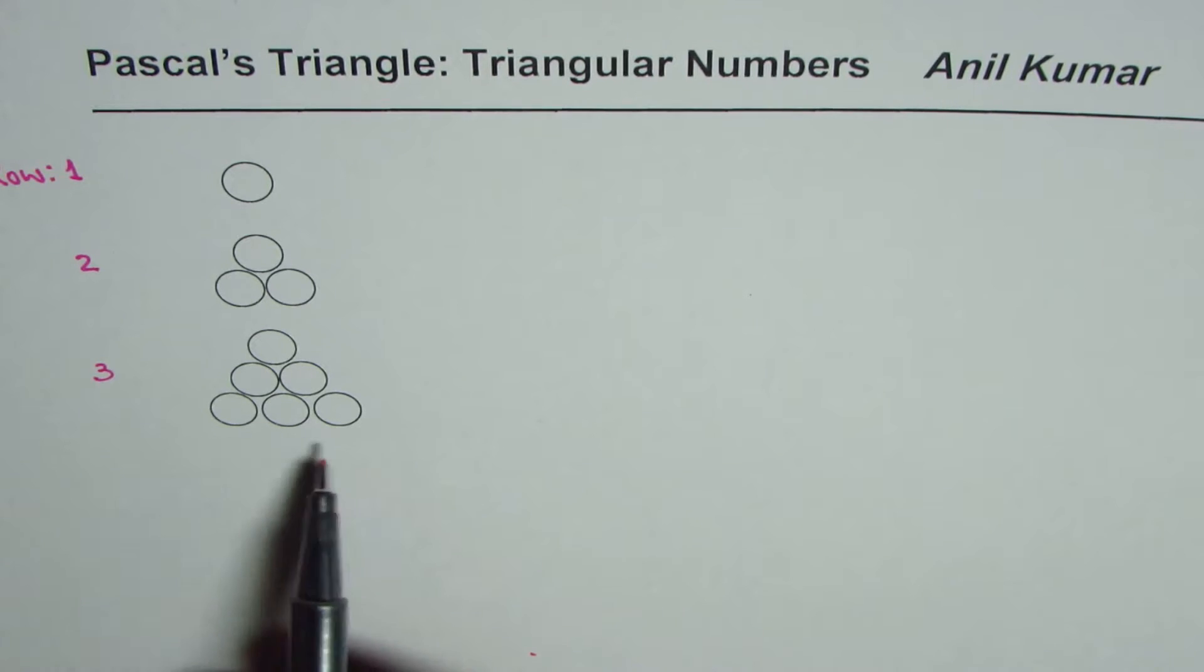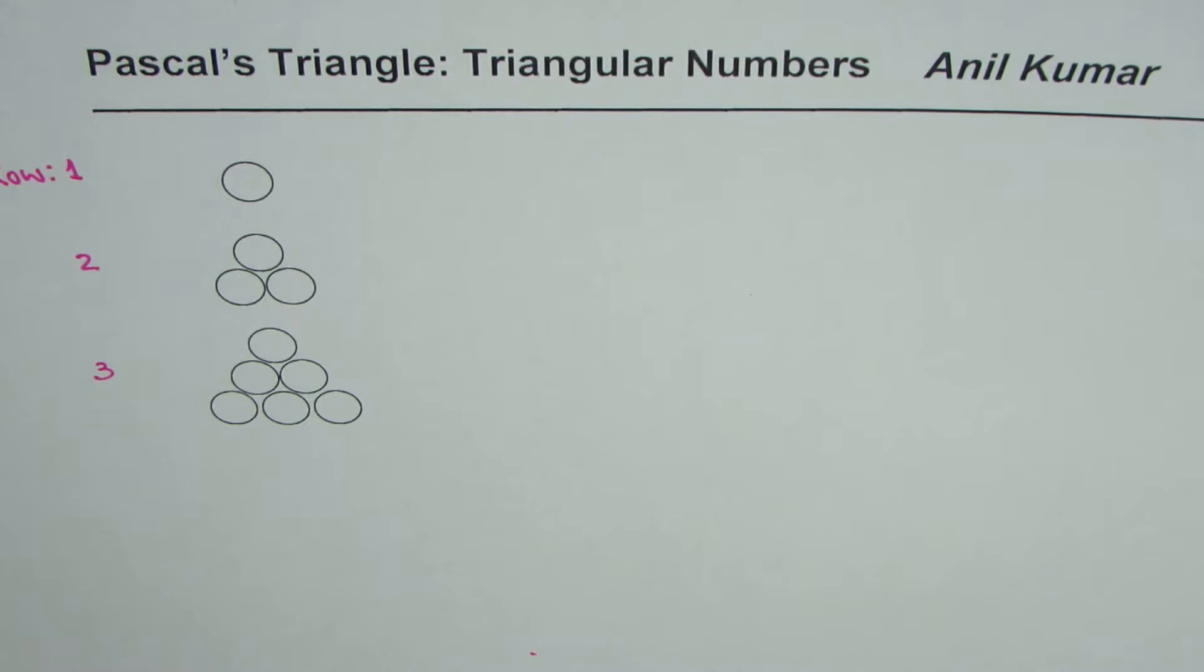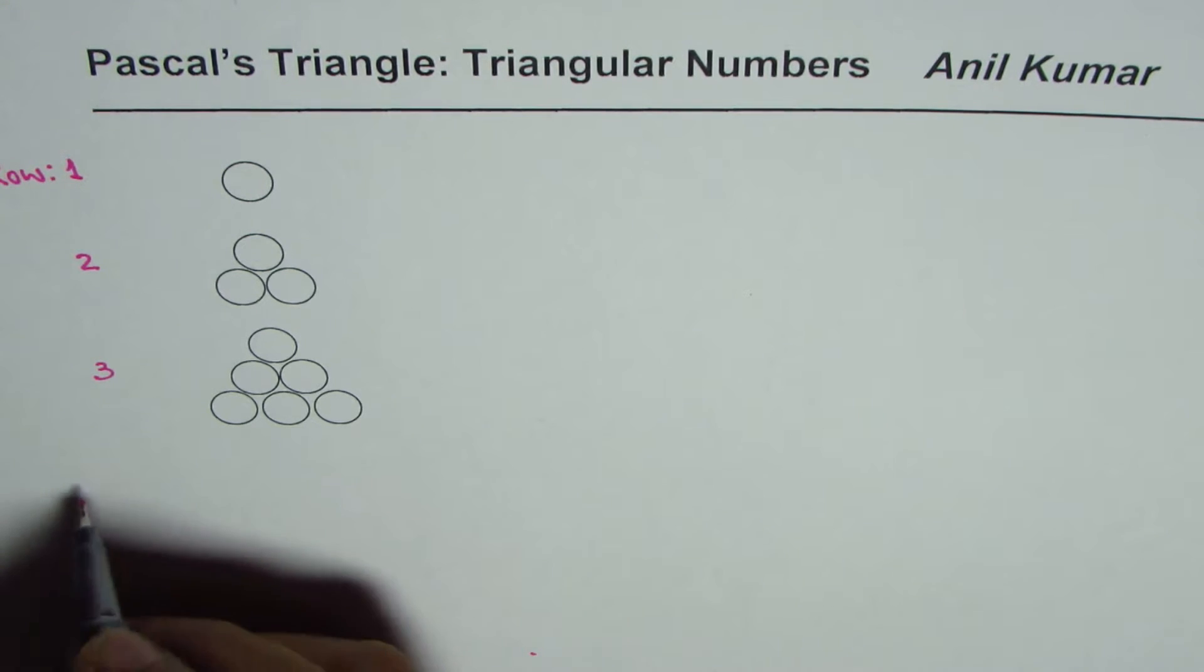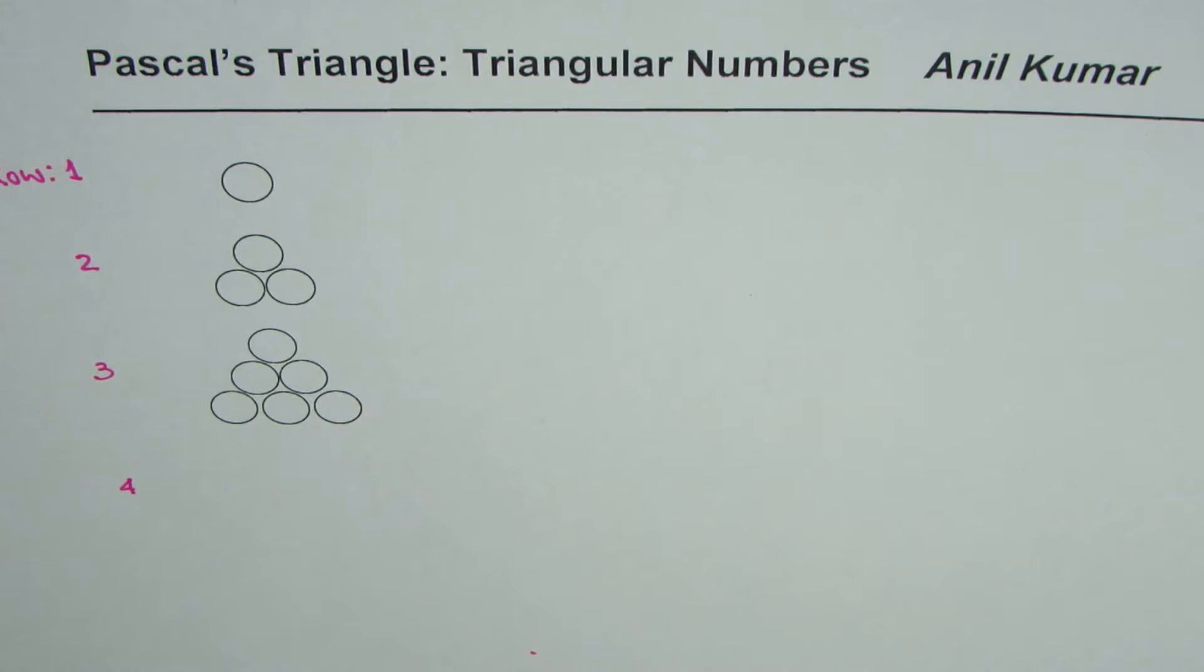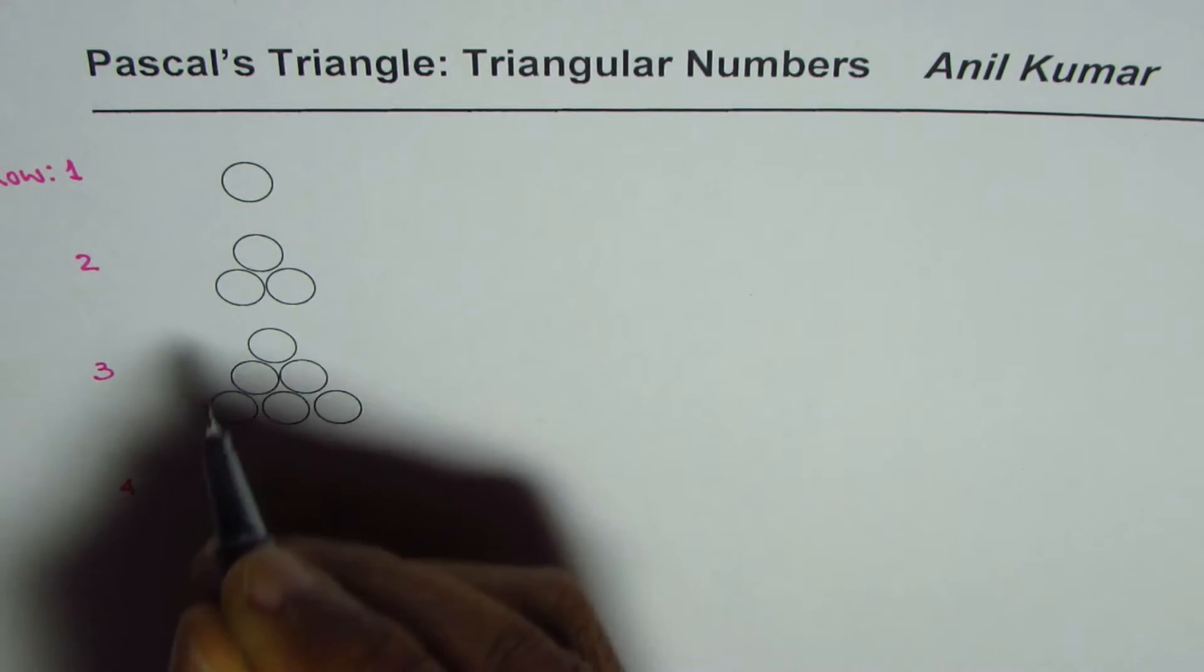As the number of rows increase, the number of circles will also increase. So let me sketch the next row which is the fourth row where we have these circles.